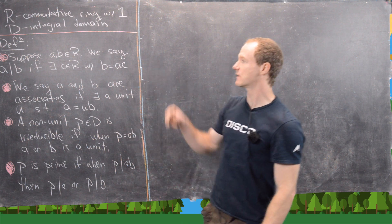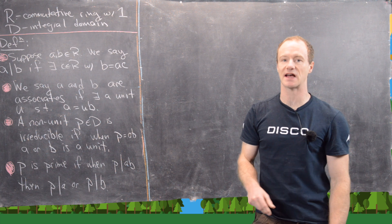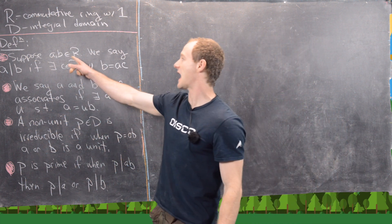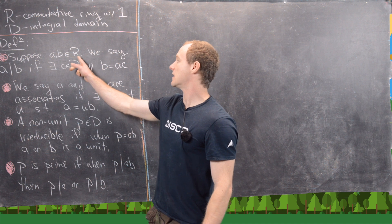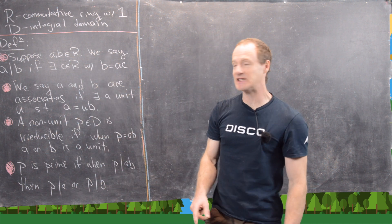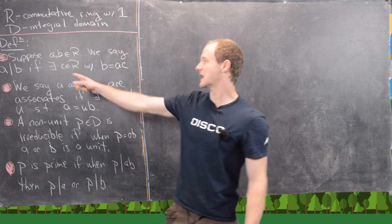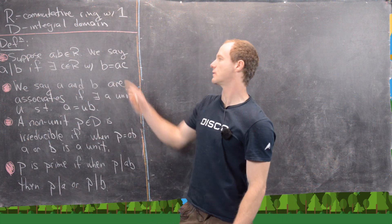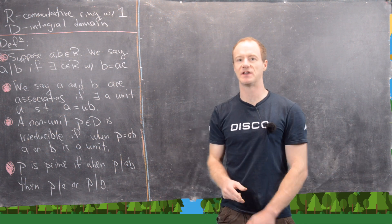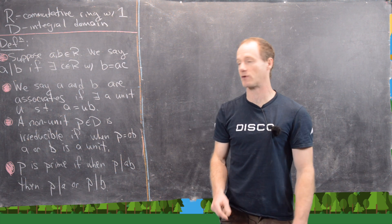The first thing we want to define is the notion of divisibility inside an arbitrary ring. We say that A and B in R — A divides B, written A | B — if there exists a C in R with B equals A times C. That's the same definition we had for numbers, just in an arbitrary ring now.